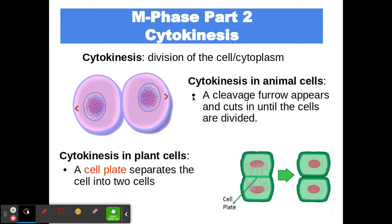In plant cells, cytokinesis is different. Because they have a rigid cell wall, a cell plate forms between the two plant cells, eventually becoming the cell wall that separates them. At the end, plant cells kind of look like a Hershey bar — they have sections but are stuck together.